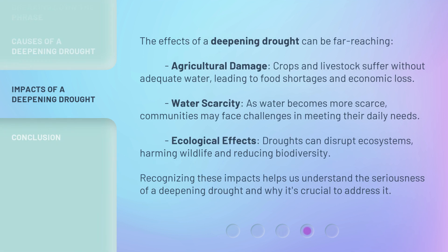The effects of a deepening drought can be far-reaching. Agricultural damage: crops and livestock suffer without adequate water, leading to food shortages and economic loss. Water scarcity: as water becomes more scarce, communities may face challenges in meeting their daily needs.